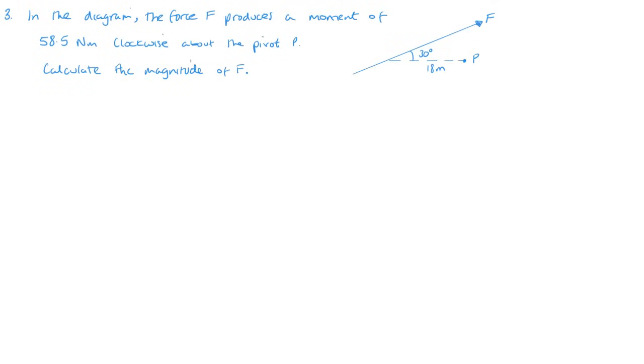Otherwise let's jump on to the final question. So this final question we've given the moment. So the moment equals our F multiplied by, now we want this distance here, so it's going to be 18 sine 30, and this is going to be 58.5. So F is 58.5 divided by 18 sine 30, and that gives me that F is 6.5 Newtons. So that one is just going backwards, so to speak.